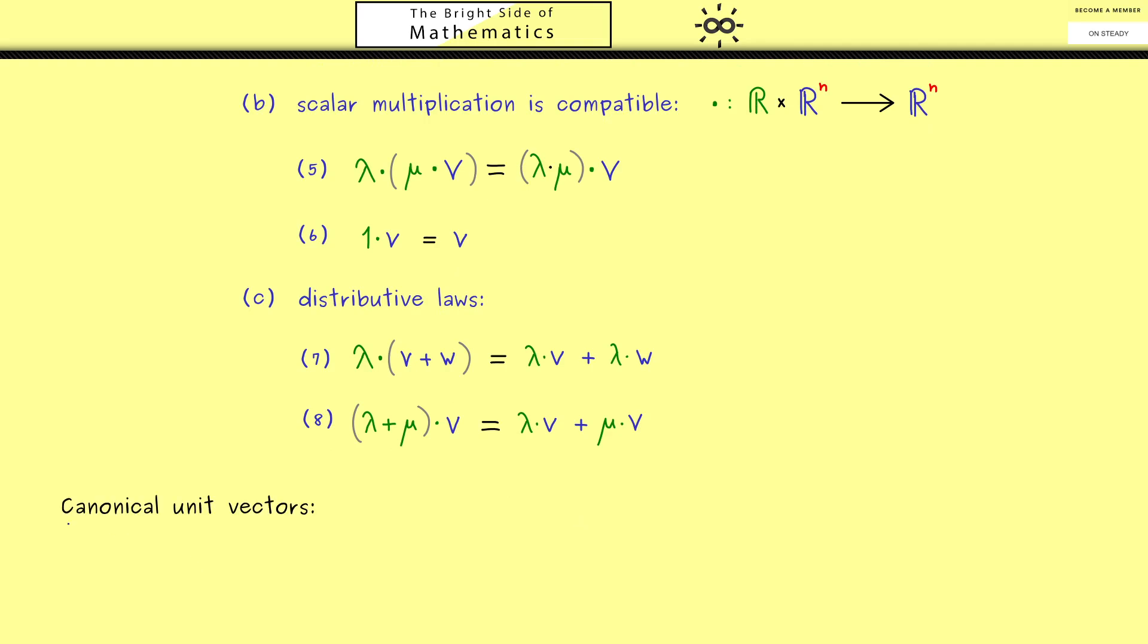However now before we close this video I want to tell you about some special vectors we have in our vector space R^n. These are the so called canonical unit vectors and denoted with e. More precisely e1 should be the vector that has one in the first component and otherwise just zeros. Then of course e2 should be the vector that has one at the second position. And then you see we can define exactly n of them. Hence the last one should be called en, and it has zeros everywhere except for the nth position where we find one.